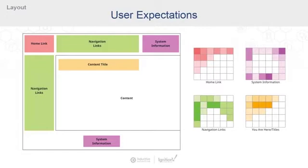Next, in green, we have navigation links. As you might expect from our use of websites and the web, folks look for these in the header and sidebar areas. And finally, in orange, we have a page title, which is usually expected to be roughly in line with your content in the middle of the page.